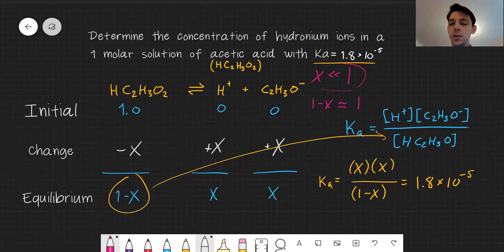That ends up making our Ka expression much simpler. So rather than saying Ka is a quadratic expression, X squared over 1 minus X, it simplifies to Ka equals X squared over 1.